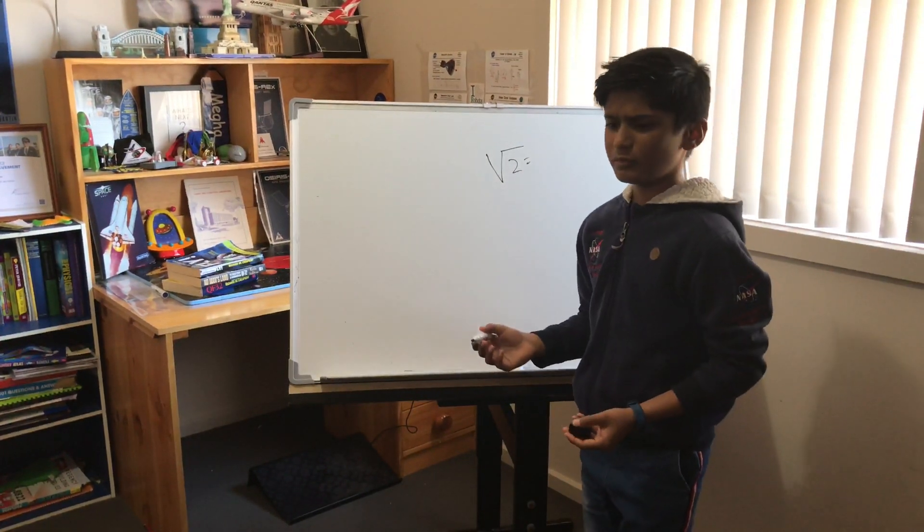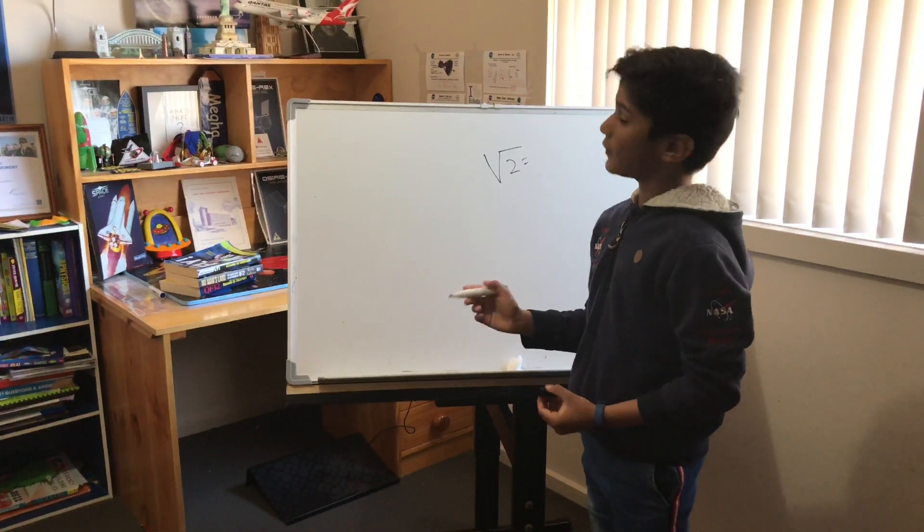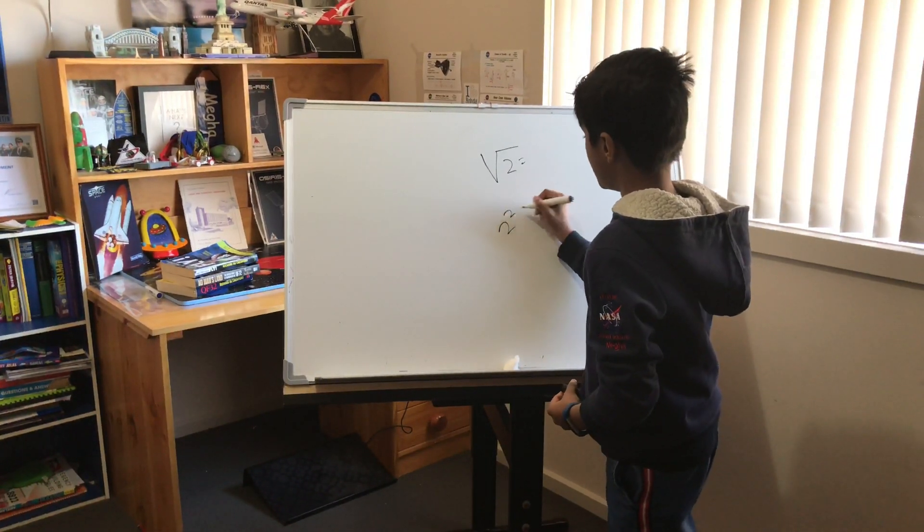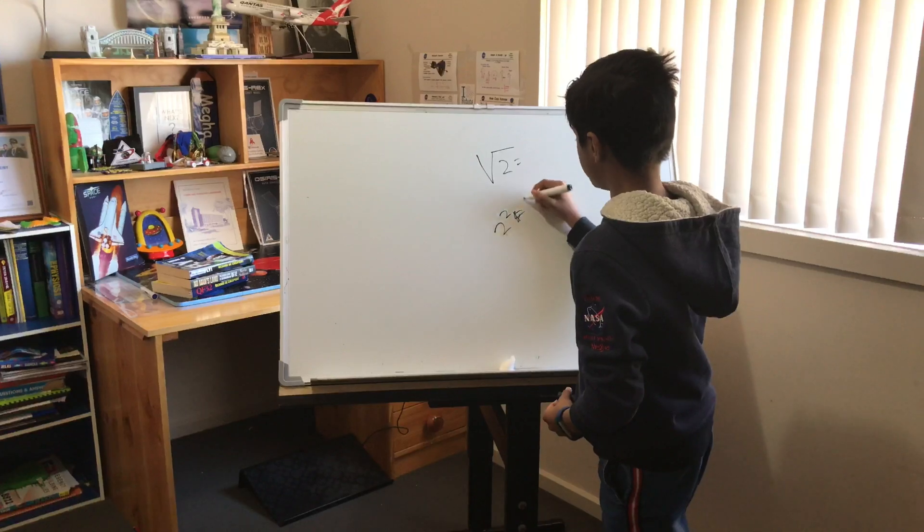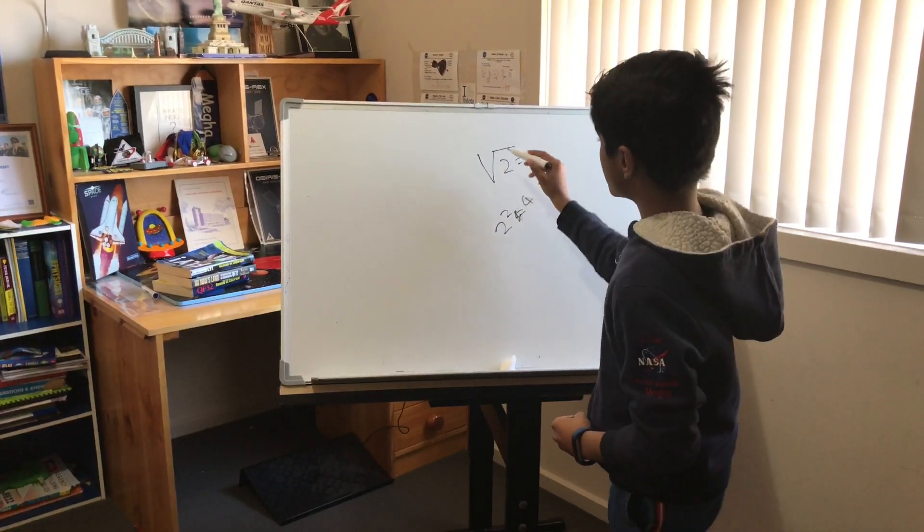So you probably think, wasn't 2 squared 4? That's what he's asking. If you think about this, 2 squared equals 4. But no, this is the square root of it.